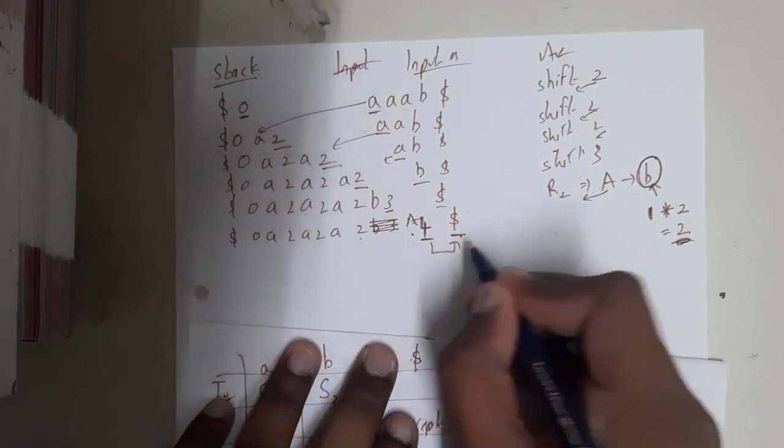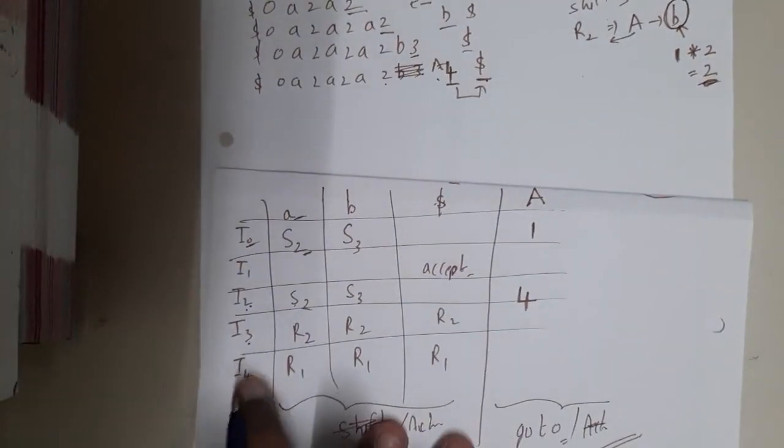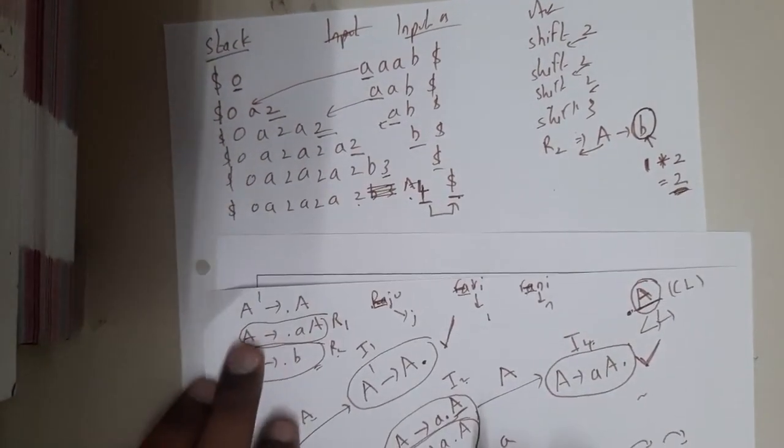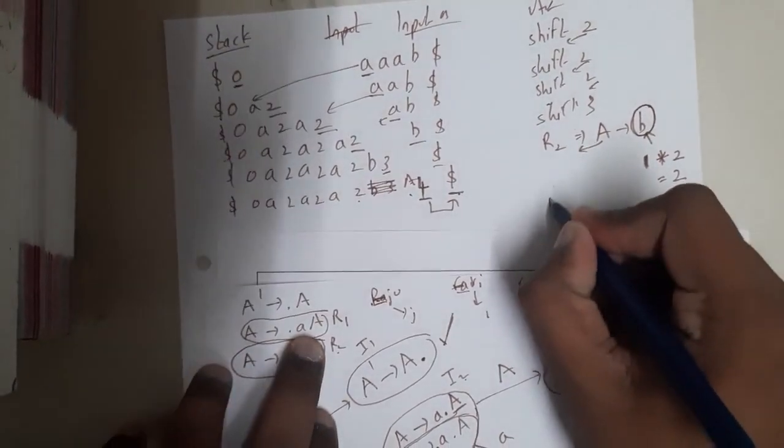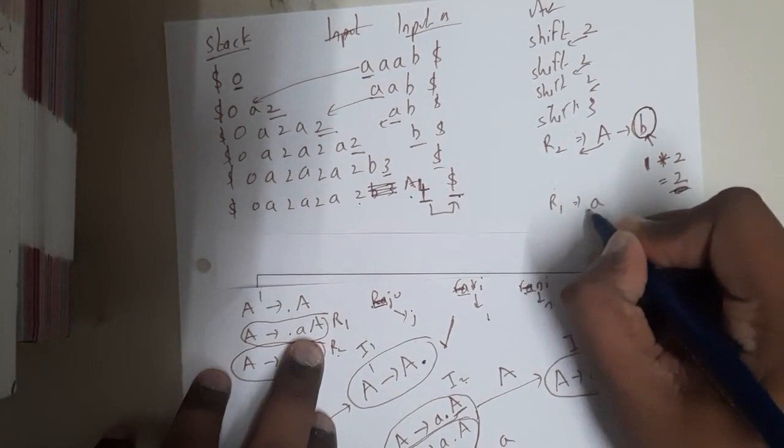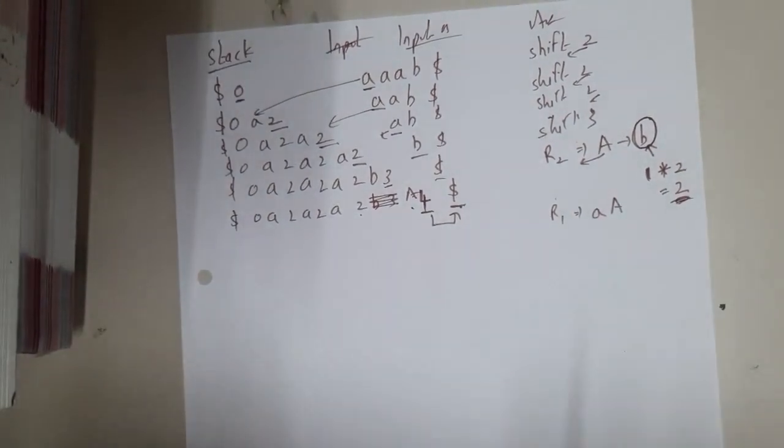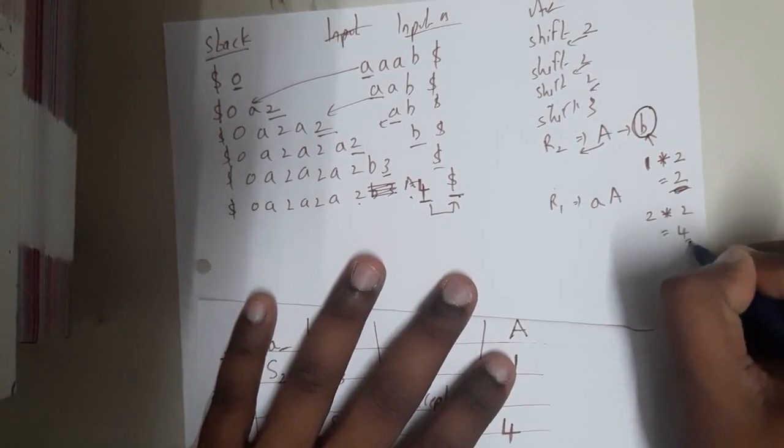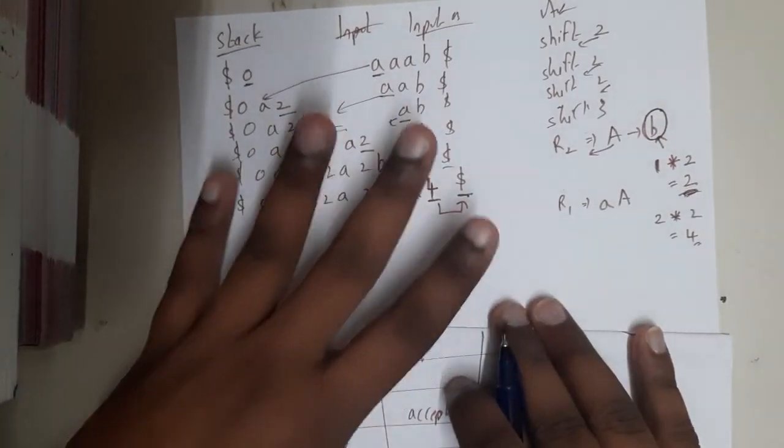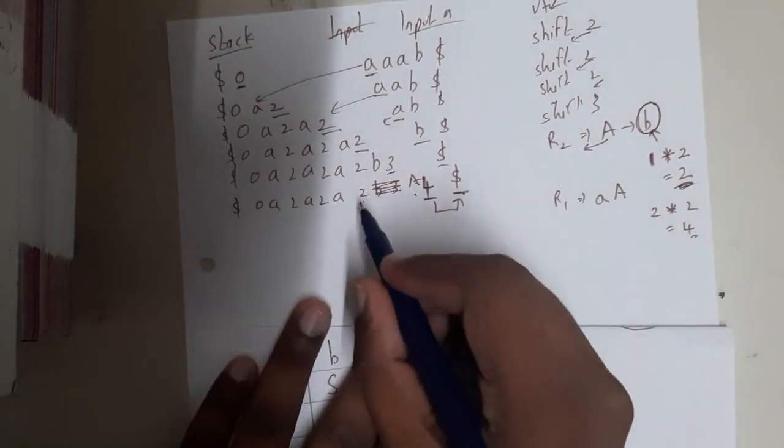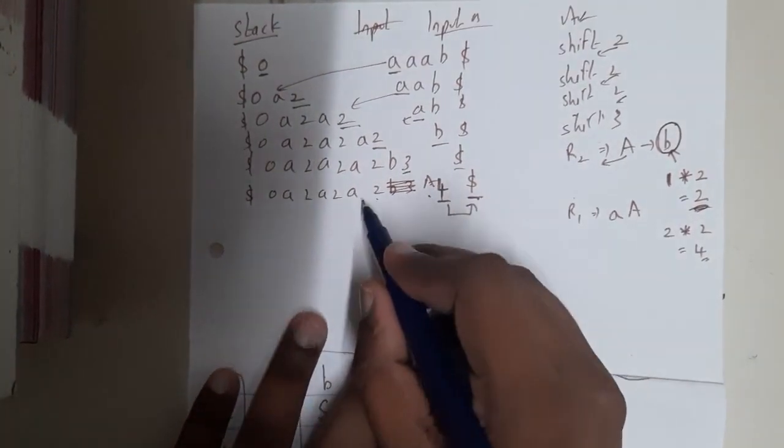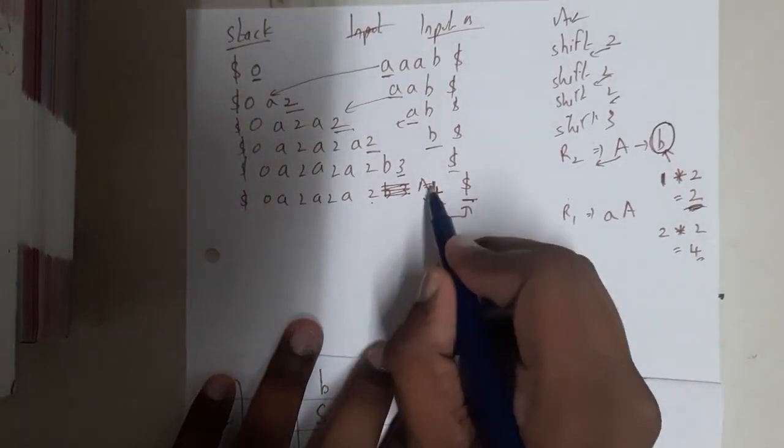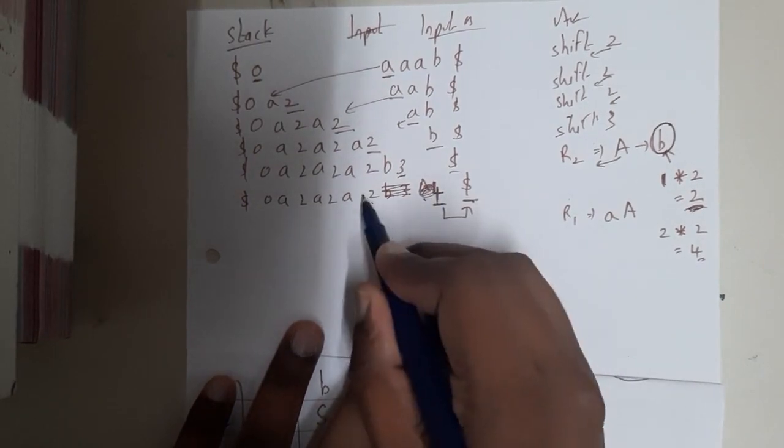...4 and dollar. So this 4 and dollar is nothing but r1, right? So what is r1? r1 is nothing but a - r1 is nothing but a capital A, right. So here we are having two elements, and into 2 is equals to 4, right. So here you will be popping four elements out of the thing. So if you pop those four elements, you will be ending up at - these two will be lost and these two will be lost, right.